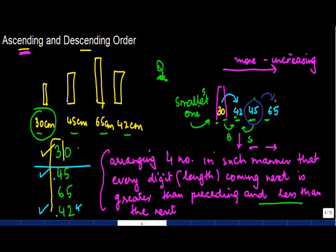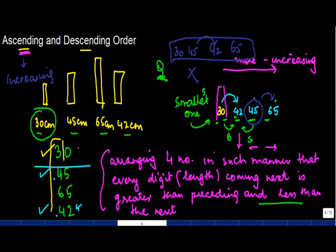So if instead of this you would have had 30, 45, 42, 65, this is not an ascending order. Why? Because while 45 is more than 30, it is less than 42. So ascending order, also referred to as the increasing order, is the one where every digit on the right side of a given digit is more than it and every digit on the left side is less than it, and that holds true for all the given numbers.